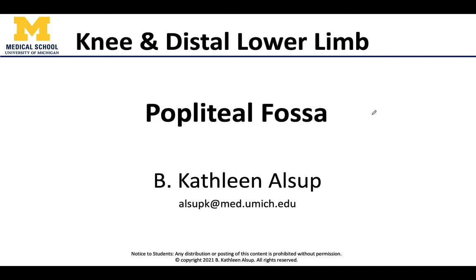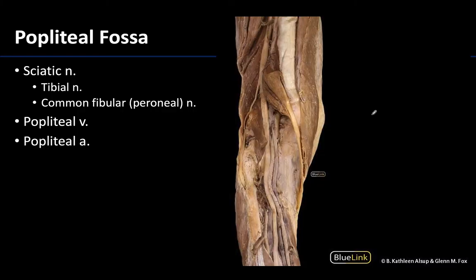Hello all, this is Dr. Alsup. In this video we will discuss how to identify the contents of the popliteal fossa. Right off the bat, let's get oriented — we are looking at a posterior view of the knee joint region. You can see a bit of the quadriceps femoris muscle and some of the tendon more anteriorly, and right back here in this posterior region you can see some fairly large neurovascular structures, which are the major contents of the popliteal fossa.